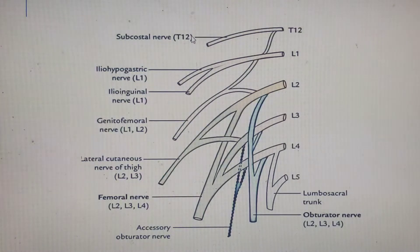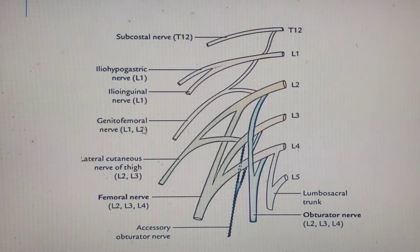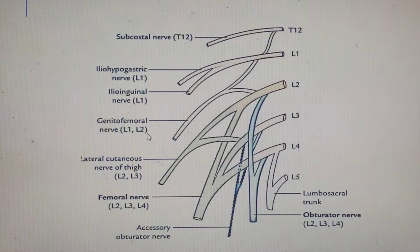We'll take each nerve through its course and innervation in later sections. Below L1, the next nerve is the genitofemoral nerve, coming from the anterior division of the ventral rami of L1 and L2. The genitofemoral nerve divides into a genital branch — supplying the cremaster muscle — and a femoral branch — supplying the skin over the femoral triangle.